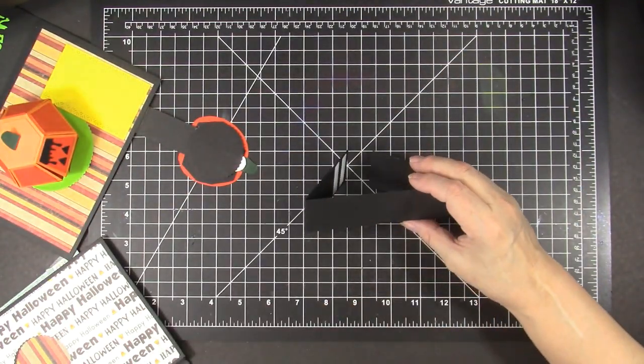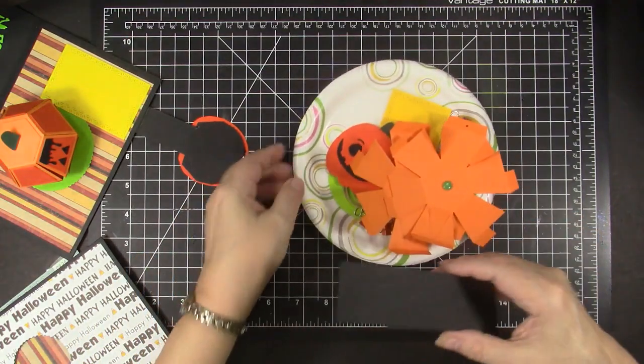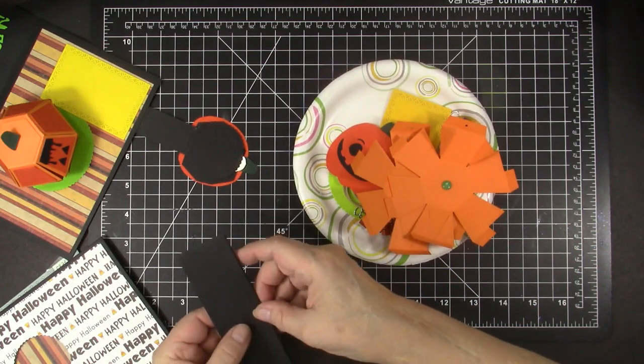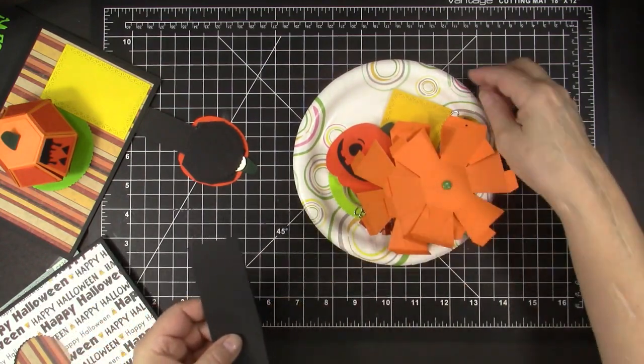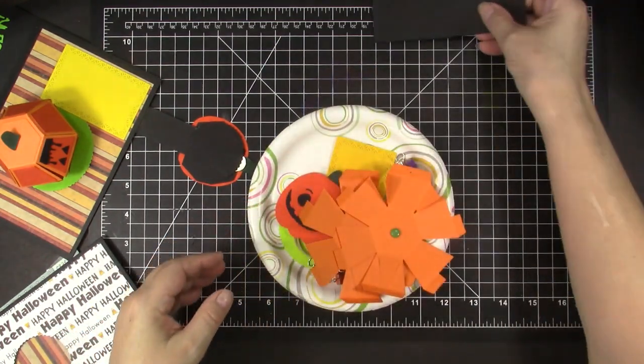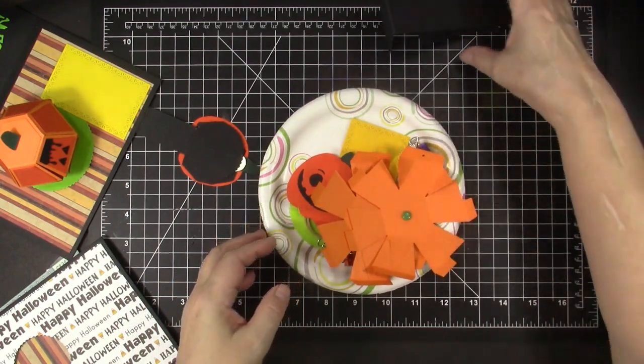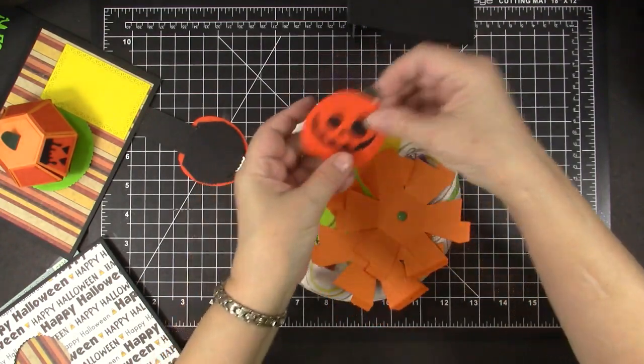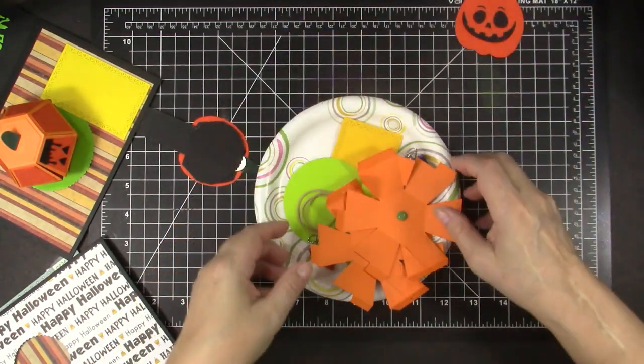So I've decided that a belly band might hold it closed a little bit better. And I've cut a belly band that is one and a half by eleven and I folded it around the edges of the card and it is ready to go. I'm going to use strong tape to attach that and to attach the pumpkin to that when we're ready for that.